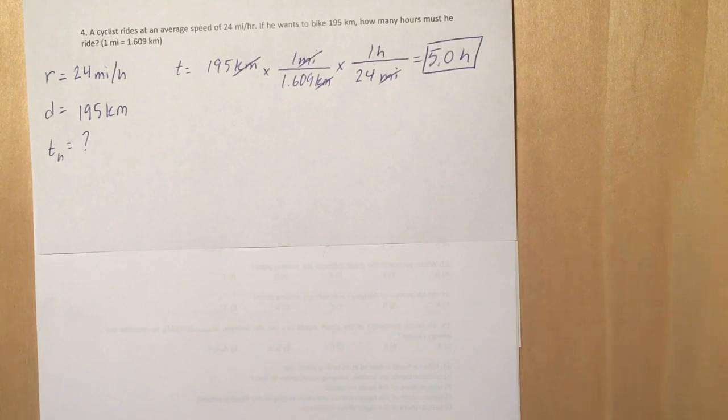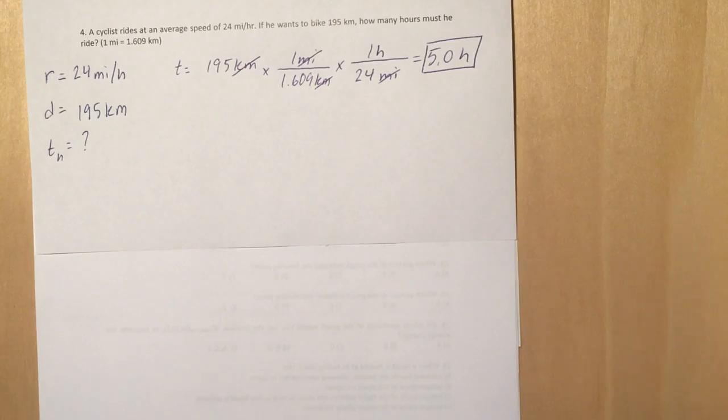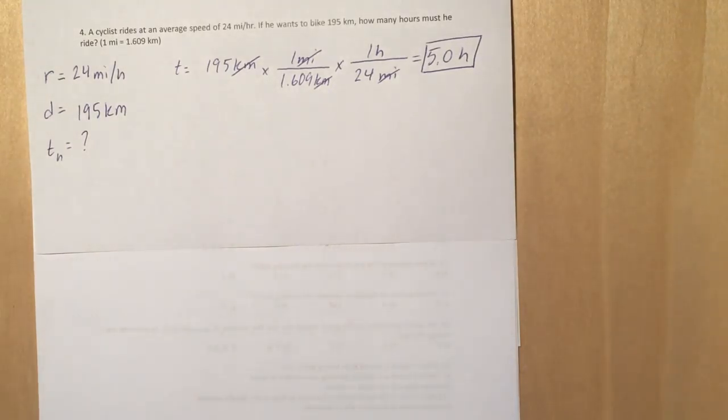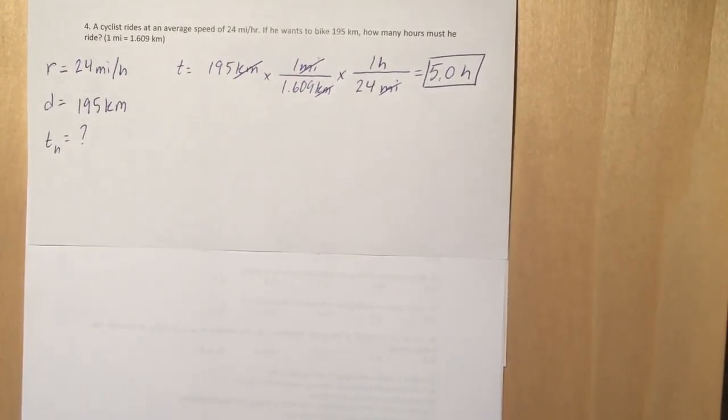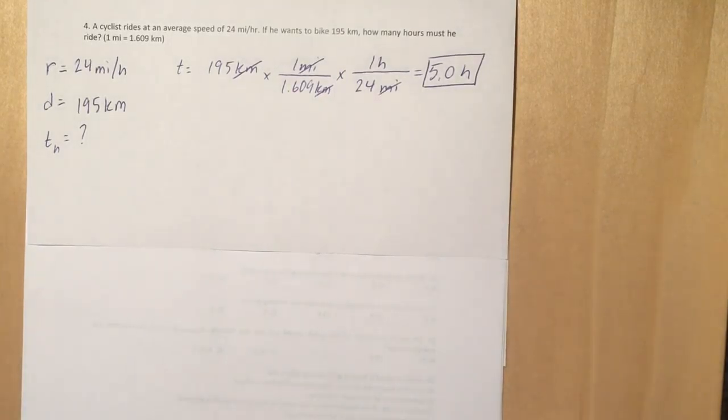And then you just multiply across. The tricky part, I guess, with this problem and some of these other problems is to remember the significant figures. And in this one in particular, there's two significant figures. So we have to write out the number 5.0 and put your units hours.